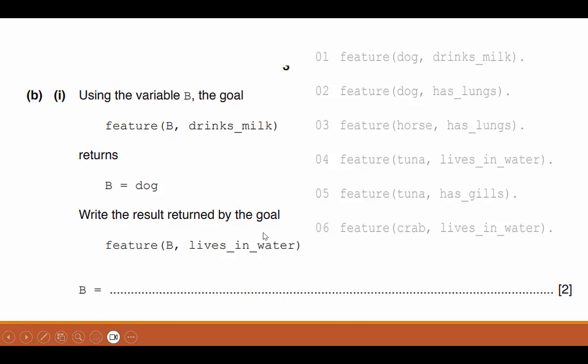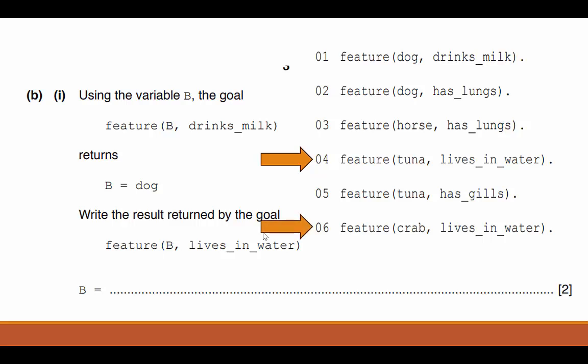So what I'm going to do is I'm going to look at my feature section of the test they gave me, and I'm going to look for what lives in water. I see that clause four has that. Tuna lives in water. I scan the rest of it, and I see clause six also has that. Now when it outputs this, it's going to output tuna first, followed by crab.